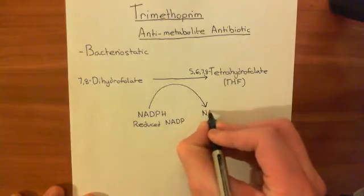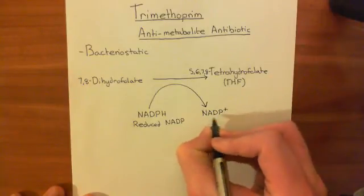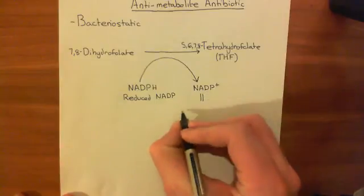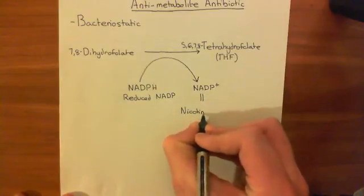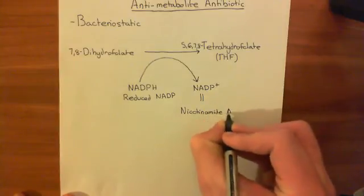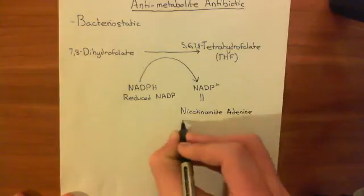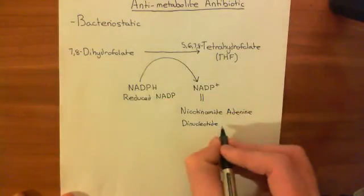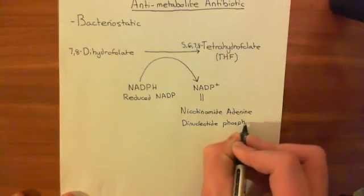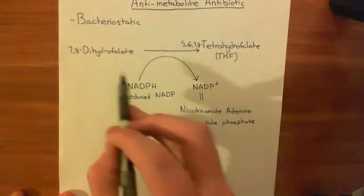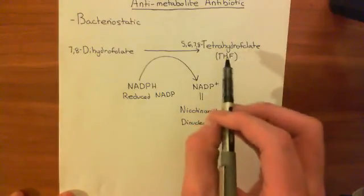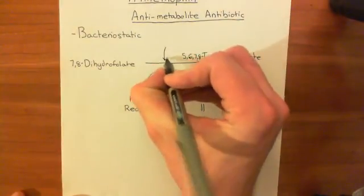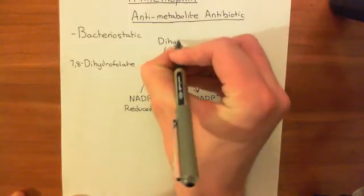In this process, the nicotinamide adenine dinucleotide phosphate is returned to oxidized NADP, written NADP+. Once you've transferred those protons to tetrahydrofolate, you can then use tetrahydrofolate to synthesize a nucleotide needed for DNA synthesis. The enzyme which catalyzes this reaction is sensibly called dihydrofolate reductase.